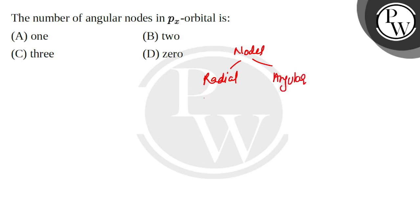Radial node's formula is n-l-1, where n is the principal quantum number and l is the azimuthal quantum number. And the angular node is simply l.